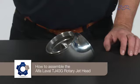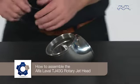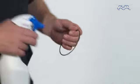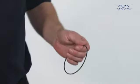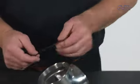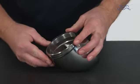How to assemble the Alfa Laval TJ40G rotary jet head. First, wet the surface of the O-ring for the body with water to ease the assembly. Mount the O-ring over the body.